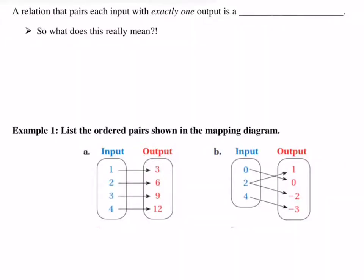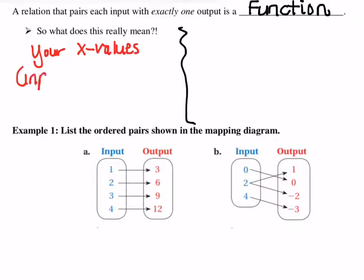So this whole section is relations versus functions. A relation that pairs each input or each X with exactly one Y or output is called a function. So what does this really mean? Well, you can look at it in an ordered pair sense or as a graph. So we're going to talk about both here. First, to be a function, that simply means your X values, or what we now learned as being inputs, cannot repeat.